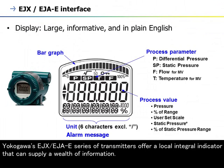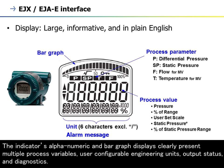Yokogawa's EJX or EJAE series of transmitters offer a local integral indicator that can supply a wealth of information. The indicator's alphanumeric and bar graph displays clearly present multiple process variables, either configurable engineering units, output status, and diagnostics.